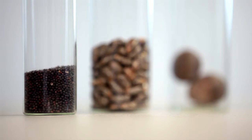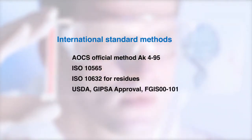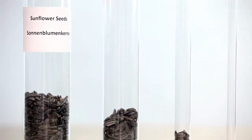Bulk analysis time domain nuclear magnetic resonance methods for oil seeds are recognized as international standard methods according to AOCs, ISO, and USDA GIPS. For seed selection and plant breeding purposes, Bruker offers sample diameters from 10 up to 50 millimeters.